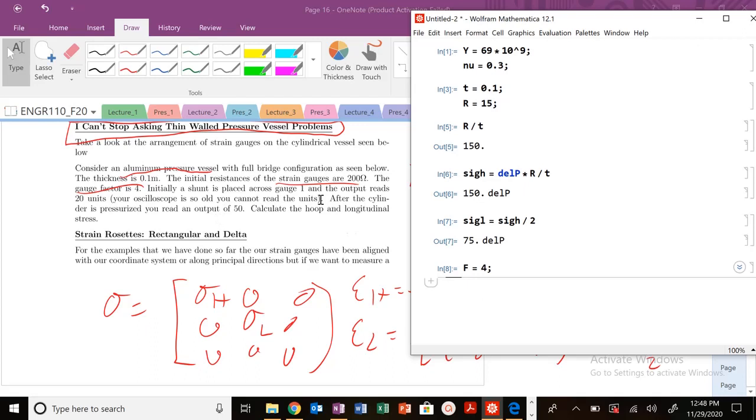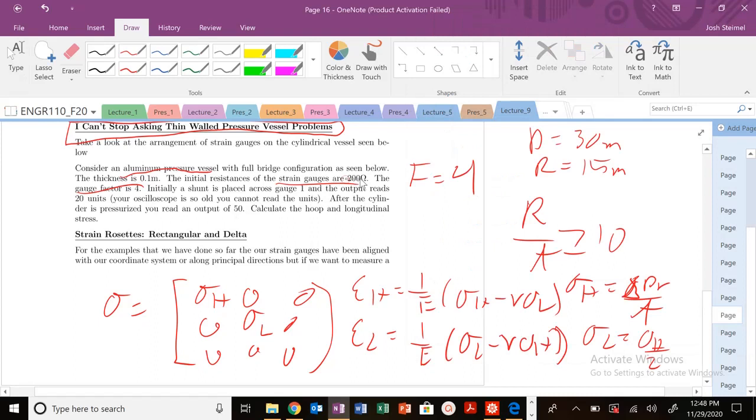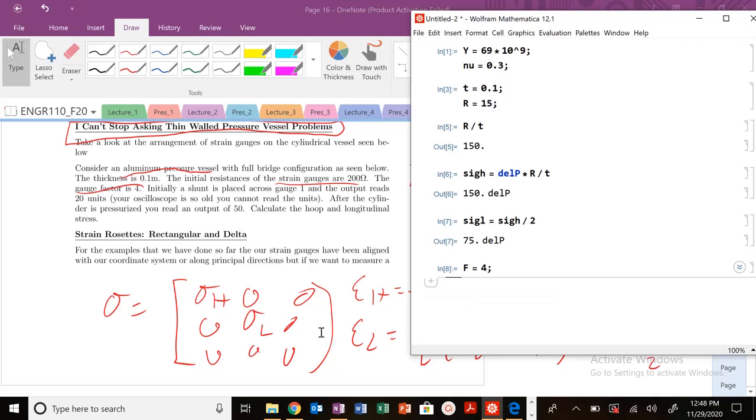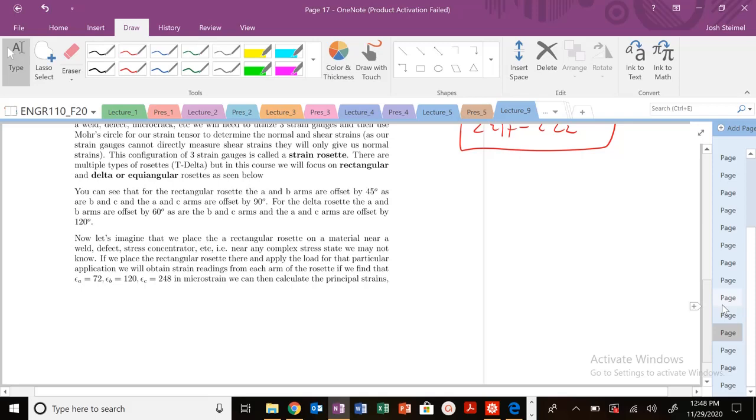Initially, shunt is placed across gauge one and the output reads 20 units. I cannot read the units. After we're pressurized, we read an output of 50. So the strain gauges are 200 ohms, and then we have this shunt placed across our thin-wall pressure vessel.